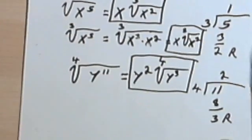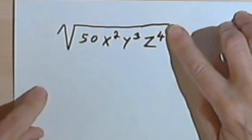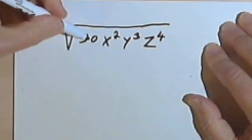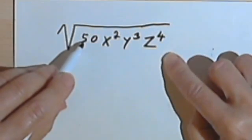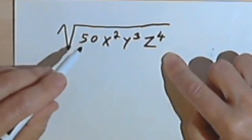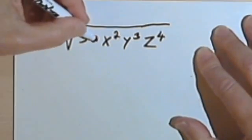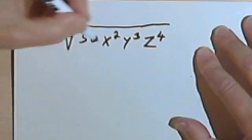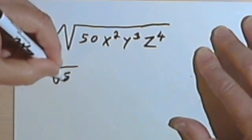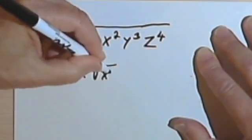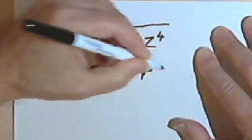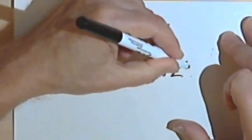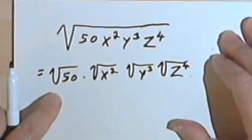Now here's one big problem which is really very simple — we're going to put together everything we've covered so far. I've got the square root of 50x squared y to the third, z to the fourth. First I'm going to break this down into the square root of 50 times the square root of x squared times the square root of y to the third times the square root of z to the fourth. You can do some of this in your head, but I want to show it on paper.